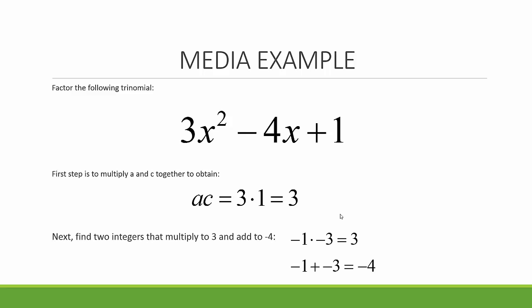Next, find two integers that multiply to 3 and add to negative 4. So negative 1 times negative 3 is 3, and negative 1 plus negative 3 is negative 4.